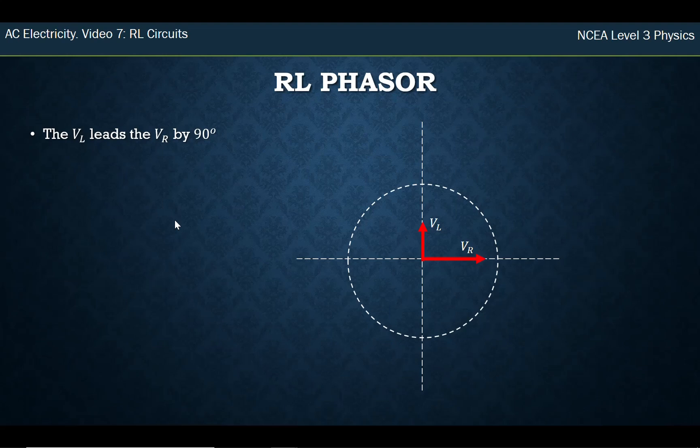So with our phasor diagram, this convention is still we do the resistor out to the right hand side and then we put our inductor voltage upwards. Because remember these are rotating around to the left, anti-clockwise. So this is going to lead by 90 degrees, it needs to be in the upwards direction compared to the resistor voltage.